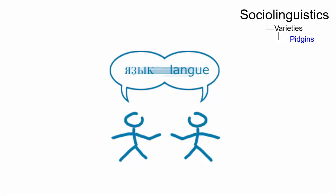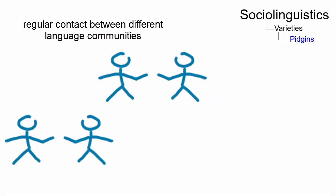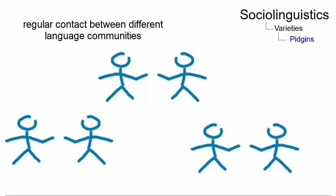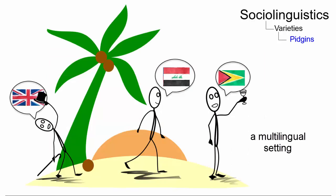The initial development of a pidgin usually requires three conditions: regular contact between different language communities, a need to communicate between them — for example in situations such as trade — and a multilingual setting where different languages are spoken.